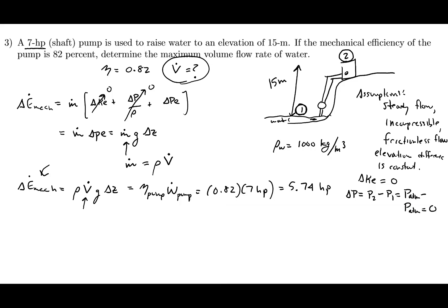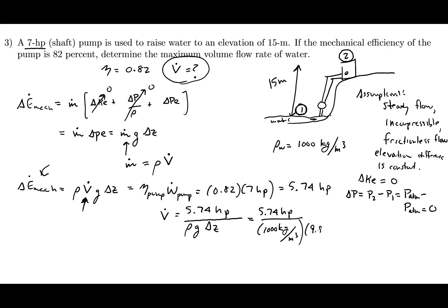Now we can solve for the volumetric flow rate directly. Rearranging, Q equals E_mech divided by rho times g times delta Z. Plugging in: 5.74 horsepower divided by 1,000 kg/m³ times 9.8 m/s² times 15 meters. We then convert horsepower to watts using 745.7 watts per horsepower, then apply 1 newton·meter/second per watt, and 1 kg·m/s² per newton.